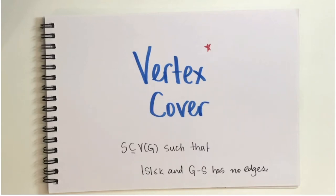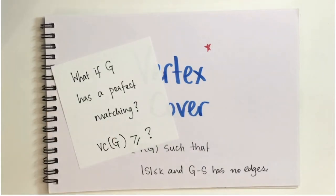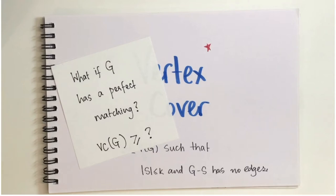One question to ask is whether this is really a small parameter in most contexts. As a concrete example, think about graphs that have perfect matchings. If a graph has a perfect matching, what can you say about the size of any smallest vertex cover? The graph could range from being just a perfect matching to a complete graph, but can you give a guaranteed lower bound on the vertex cover size?